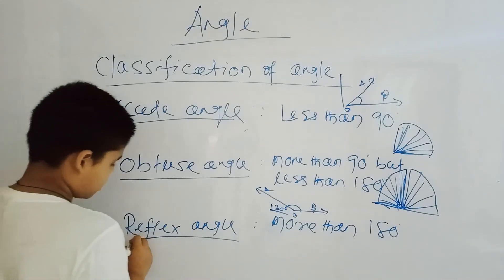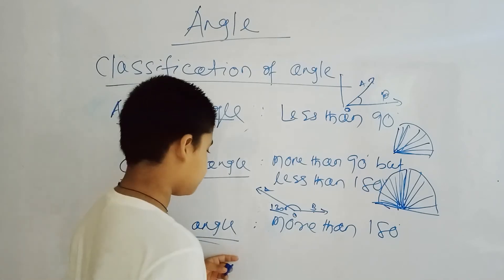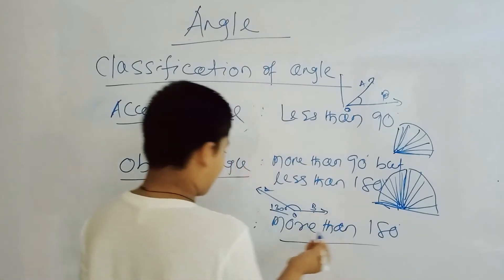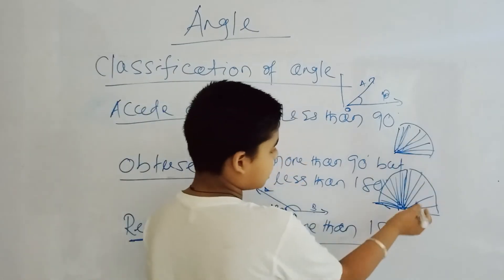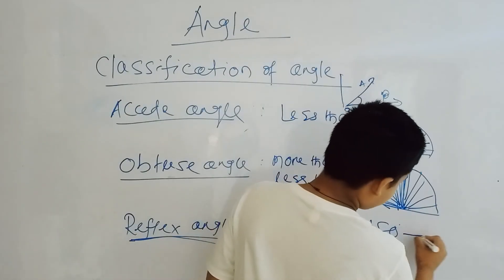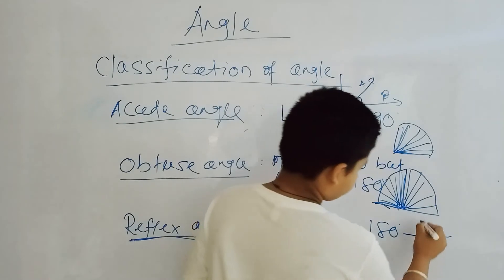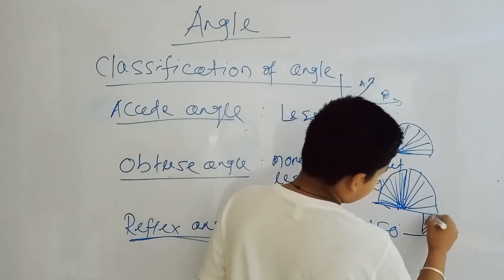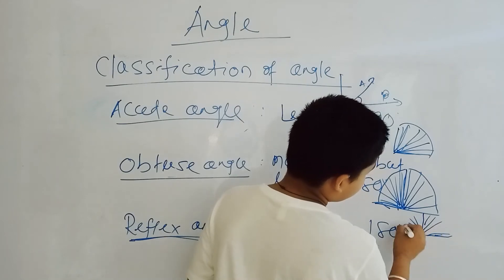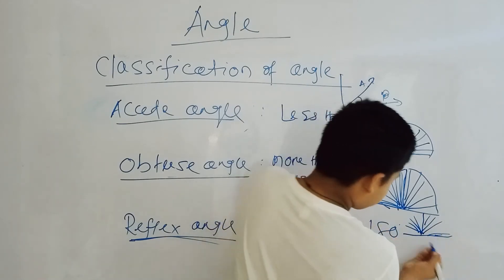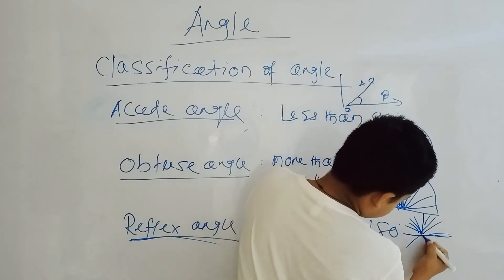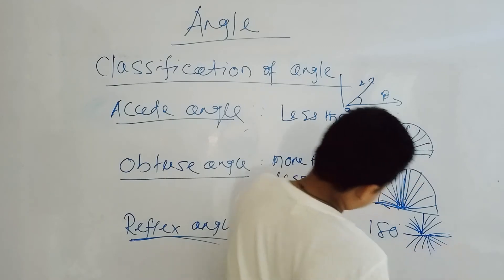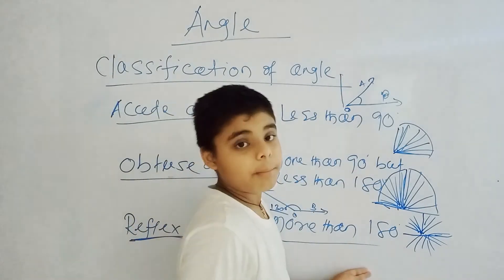Coming to the next classification — the reflex angle. Looking at this figure, the obtuse angle is greater than 180 degrees. Wait — to clarify: the reflex angle is greater than 180 degrees, not the obtuse angle. The obtuse angle is between 90 and 180 degrees.